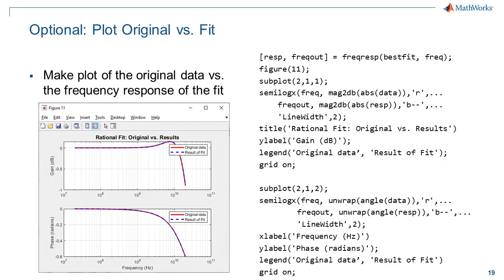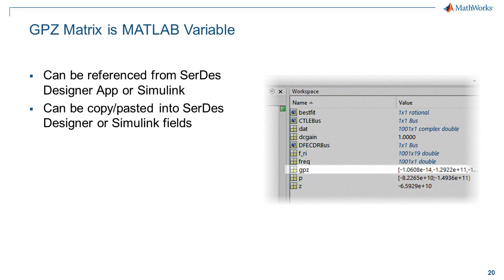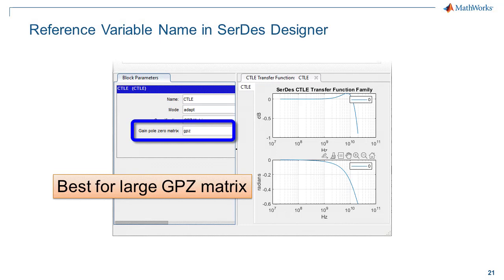To check the accuracy of the fit, the frequency response is extracted from the rational object. The magnitude in dB and the phase of the original data and the response from the fit are both plotted. The GPZ matrix is in a MATLAB workspace variable. It can be copied and pasted into the CERTES Designer app or Simulink, or directly referenced from the CERTES Designer app. If the value in the gain-pole-zero matrix field is the name of a MATLAB workspace variable, CERTES Designer will use it for the GPZ matrix.